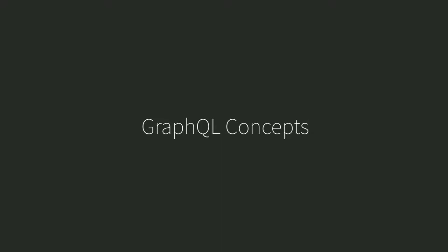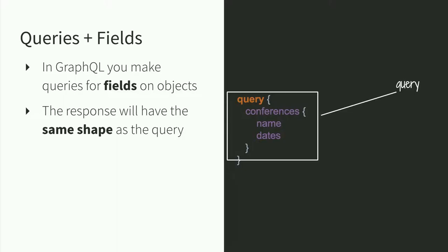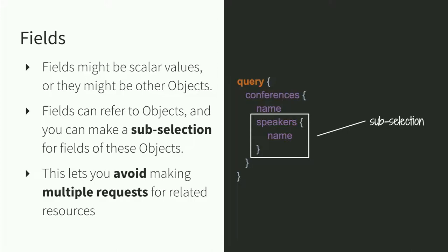Let's talk about some GraphQL concepts. Essentially, GraphQL is about queries and fields. You make queries for fields on objects, and the response will have the same shape as the query. Fields might be scalar values — primitives like booleans, strings, numbers — or they might be other objects. We talk about making a subselection when selecting another complex object. You can continue to nest these subselections throughout your query, which allows you to avoid making multiple requests for related resources.